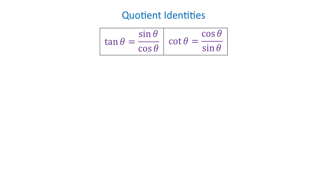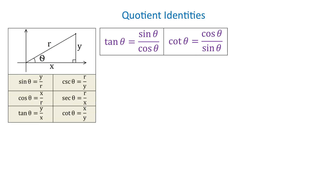The quotient identities are: tangent of theta equals sine of theta over cosine of theta, and cotangent of theta equals cosine of theta over sine of theta.